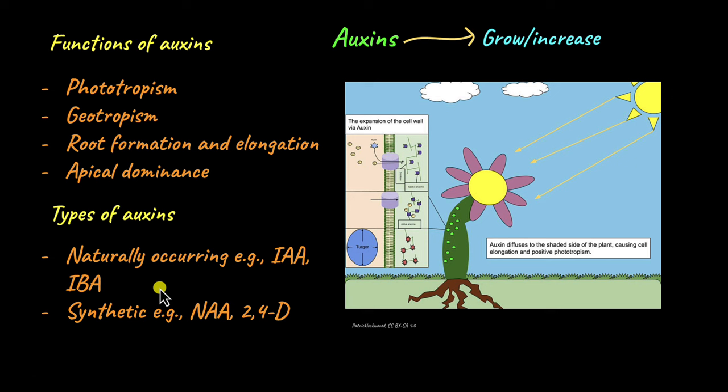Naturally occurring auxins are produced in the plant itself, while synthetic auxins are produced in industries and have a variety of uses in the agriculture and horticulture industry. The synthetic auxins are often sprayed on young plants to make them grow faster. With this, let's move on to the next type of growth promoters: gibberellins.